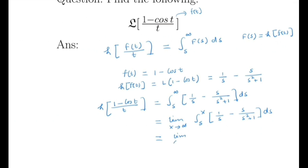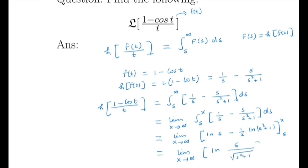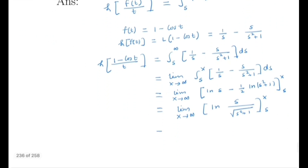Solving the integration: the integral of 1/s is ln s, and the integral of s/(s² + 1) is (1/2) ln(s² + 1). Evaluating from s to x and simplifying, the expression becomes ln(x / √(x² + 1)) minus ln(s / √(s² + 1)).